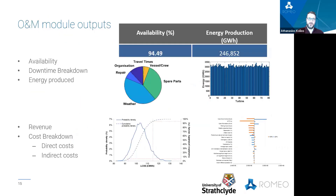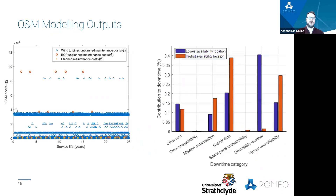The O&M module can return values for availability, downtime breakdown, energy produced, cost breakdown, revenue produced, as well as detailed values of different O&M activities that are anticipated based on the failure rates that are fed into the system.